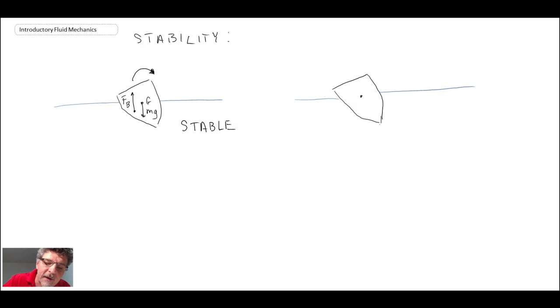Versus if we had something like this, again, we have the weight. So at the center of gravity, we have mass times gravity. But if it turns out that our buoyancy force was over here, then the moment that we would get would look something like this. And consequently, that would continue to rotate the object. That would be an unstable situation.